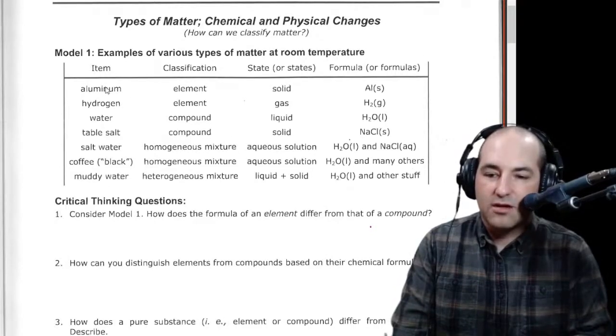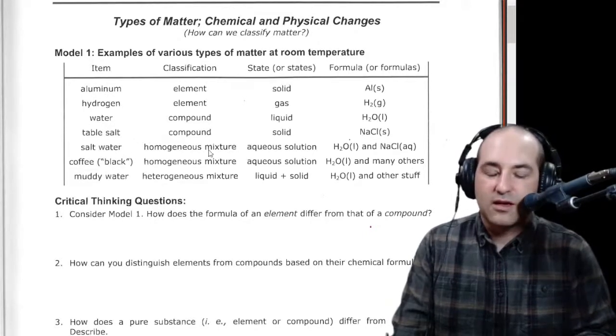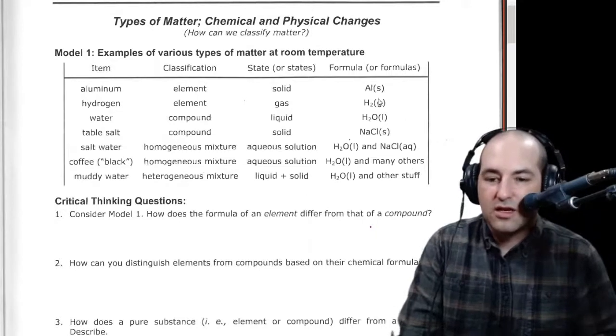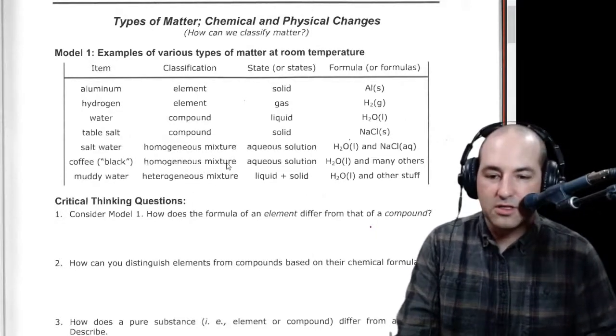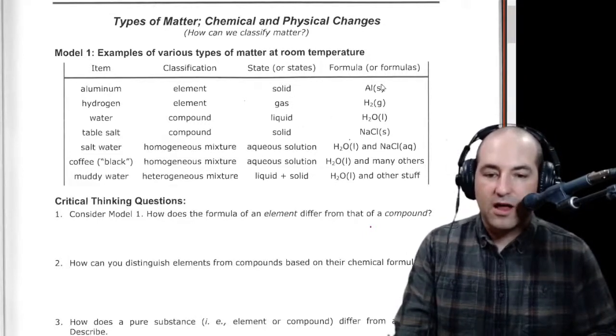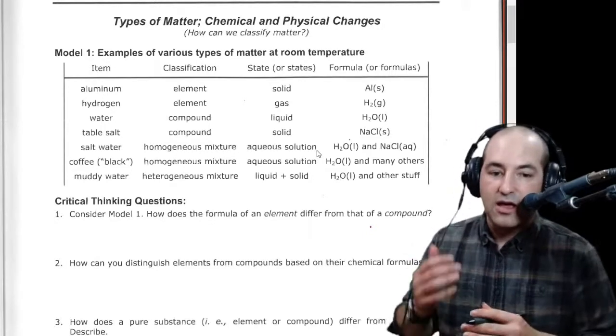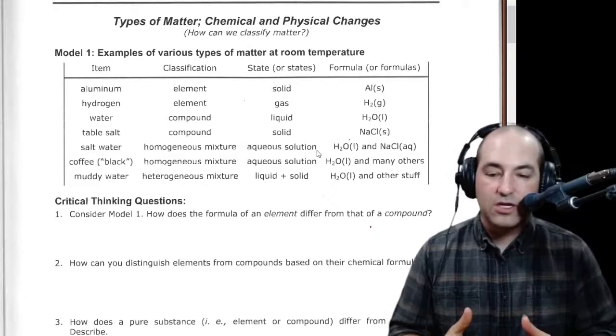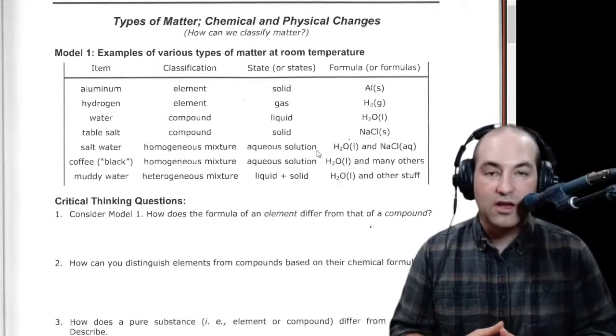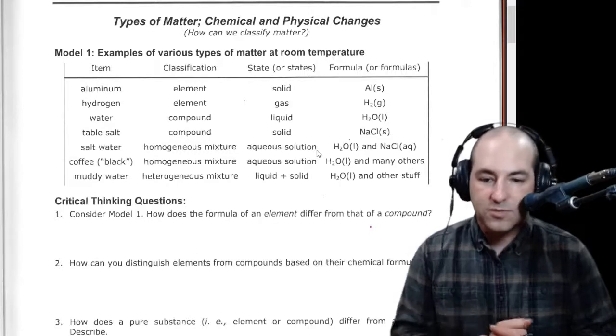The first column is just some items, some things. The second column is its classification as an element compound, homogeneous mixture, or heterogeneous mixture. The third column is its state, and the fourth column is its formula. Now, these symbols may or may not make any sense to you. That's okay. The idea of this activity is to use that information to try to start making some sense of it just because they're given as being related to each other.